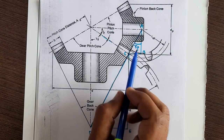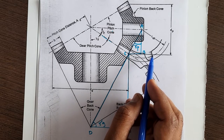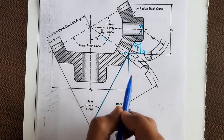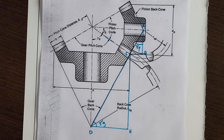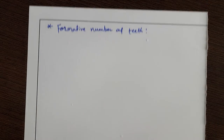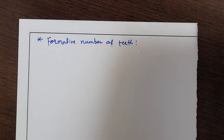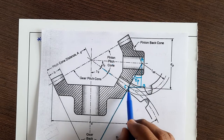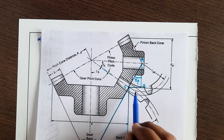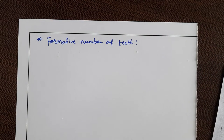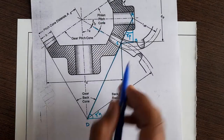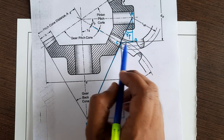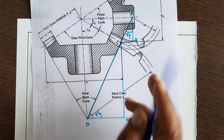So the bevel gear is kinematically equivalent to an imaginary spur gear in a plane perpendicular to the tooth at the large end. Similar to how a helical gear is equivalent to an imaginary spur gear in the normal plane, the bevel gear is equivalent to an imaginary spur gear at the large end. The pitch circle radius of this spur gear equals the backcone radius — which is segment A to C — and this backcone radius is also the pitch circle radius of the imaginary spur gear.